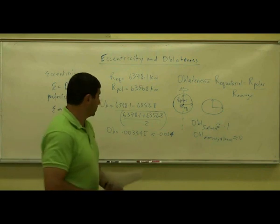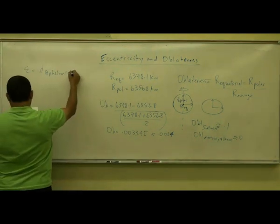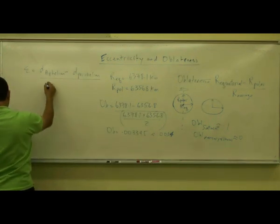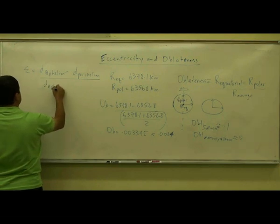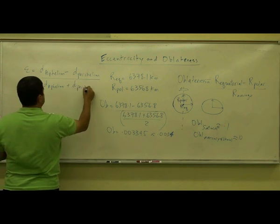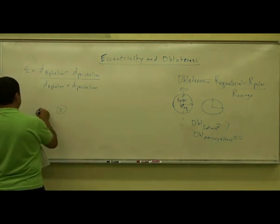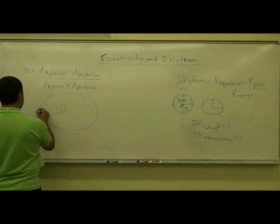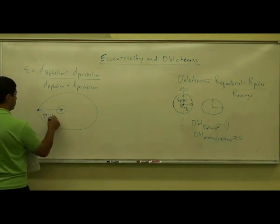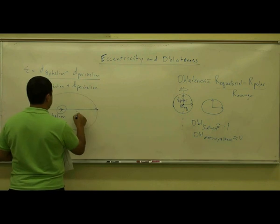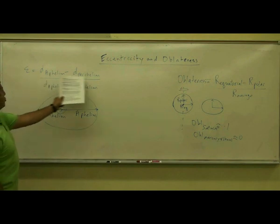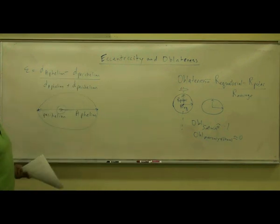Now let's look at eccentricity. The formal definition is: the aphelion distance minus the perihelion distance, divided by the aphelion distance plus the perihelion distance. The closest approach to the Sun is perihelion, and the furthest approach is aphelion. So you subtract the two and divide by their sum.